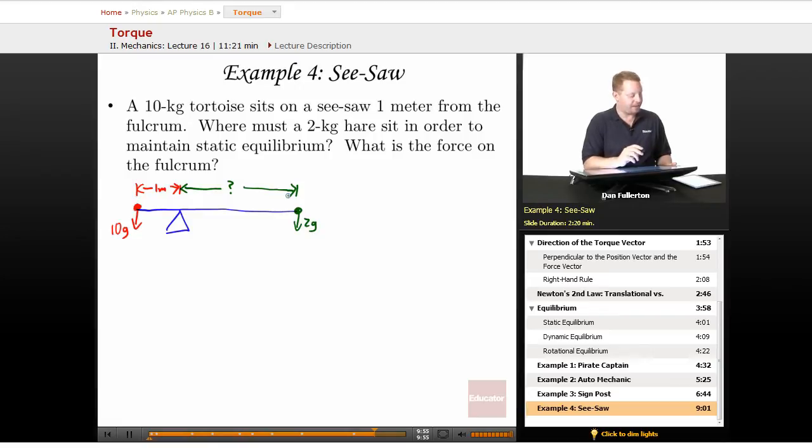If it's in static equilibrium, though, we know that the net torque must equal zero. So looking at our torques, the 10 g over here, that force times the distance, one meter, 10 g times one, now the negative direction, minus 2 g times whatever that distance happens to be from the fulcrum x, must equal zero.